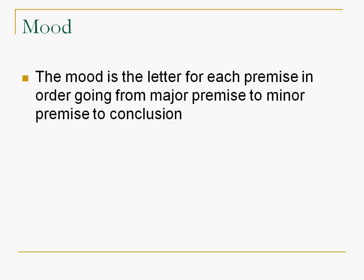Now, the mood is the letter for each premise in order going from the major premise to the minor premise to the conclusion. So once we have these in order, we name the letter for each premise and the conclusion. And remember, all are is A, no are is E, some are is I, and some are not is O. You remember that. So that's from chapter 4. All we have to do is name the letter for each statement.